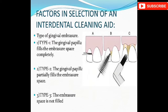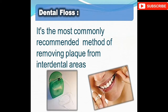Factors in selecting interdental cleansing aids: Type 1 — the gingival papilla fills the embrasure space completely; Type 2 — the papilla partially fills the embrasure space; Type 3 — the embrasure space is not filled. Dental floss is the most commonly recommended method for removing plaque from interdental areas.